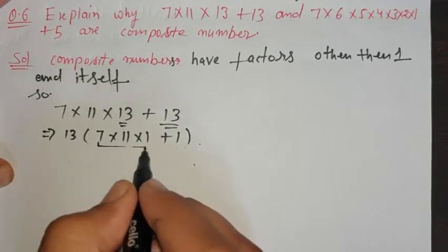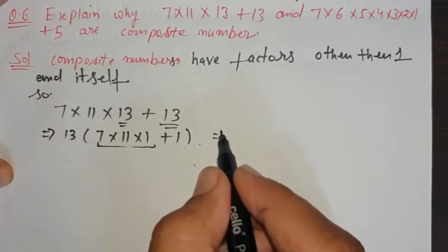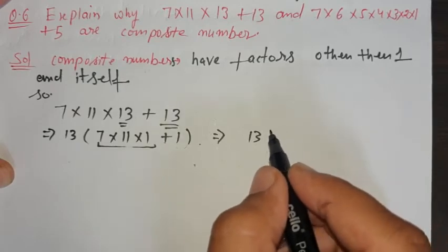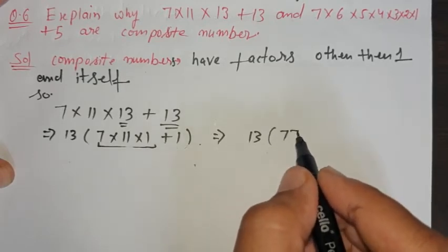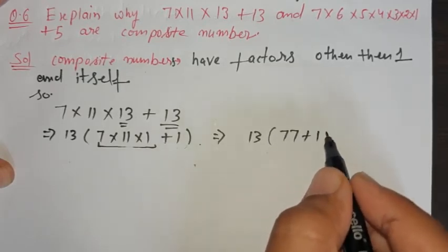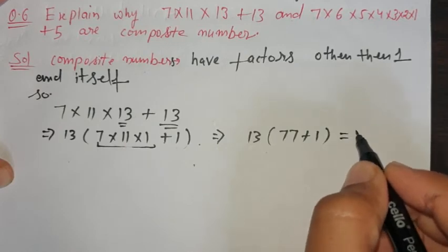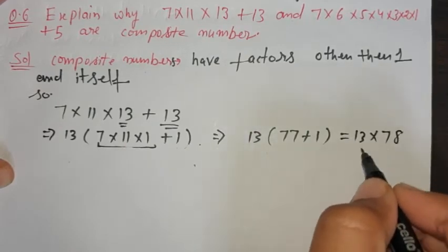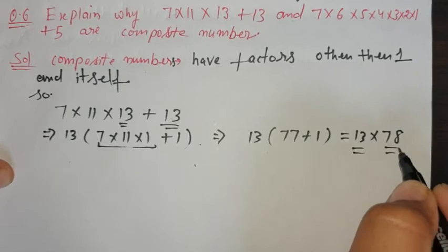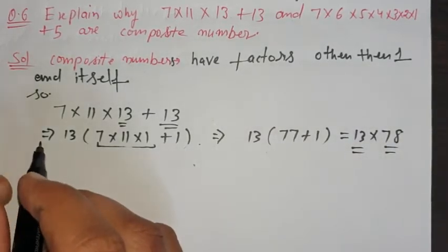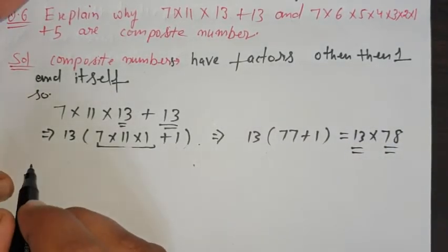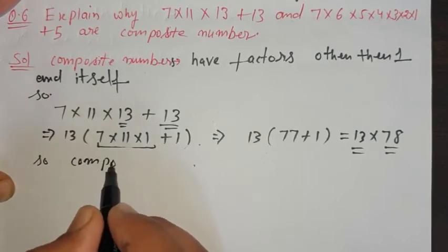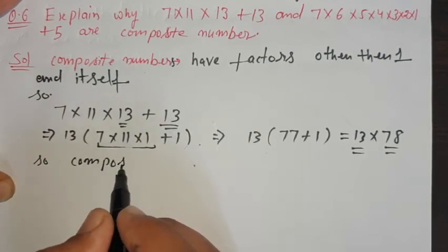After taking 13 common, we get 13 × (7 × 11 + 1) = 13 × (77 + 1) = 13 × 78. Since it has a factor other than 1 and itself, it is a composite number.